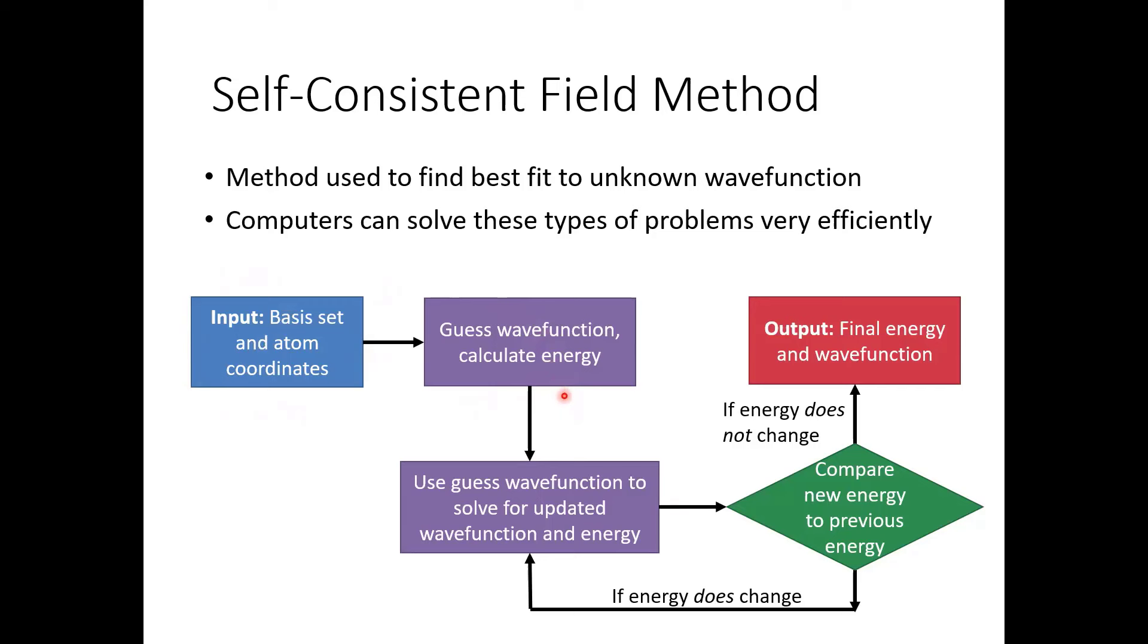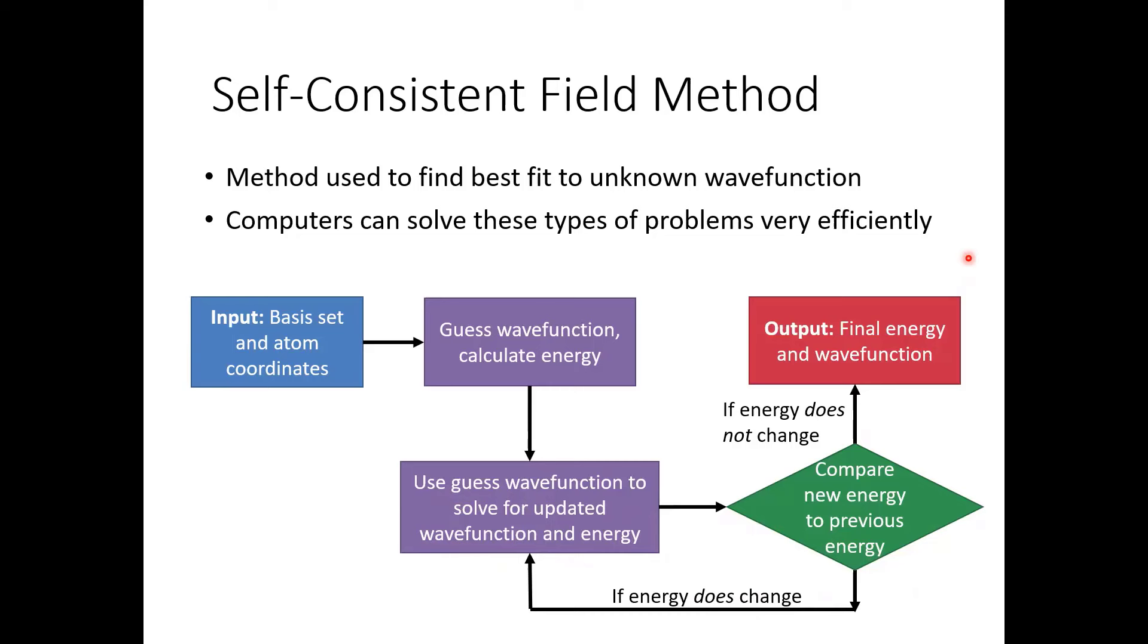The way that we use these basis functions is we do something called the self-consistent field method. And that's used to sort of optimize the basis functions to fit our unknown function. And so what we have to give the computer is information about what atoms we're using and what basis set we want to use. And then we give the computer additional information about how we want to do the approximate calculation. So we guess some wave function and calculate the energy. And then basically we use that wave function to update. So we use that guess wave function to solve for an updated wave function and energy. And basically go around in circles until the energy doesn't change anymore. Computers are really good at solving this type of problem. And so we don't want to do it by hand, but we want to make use of the computer.